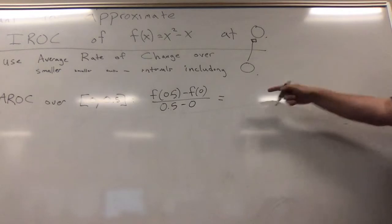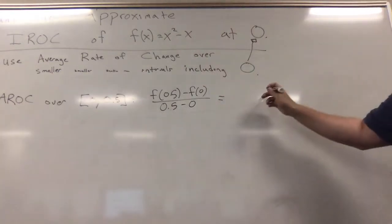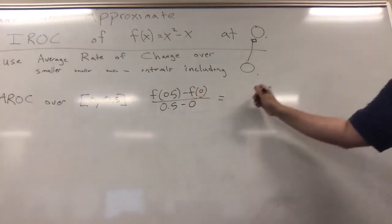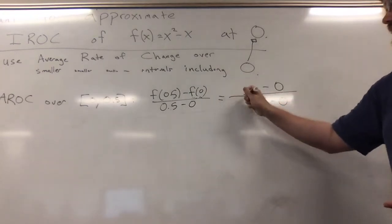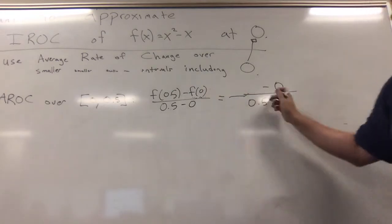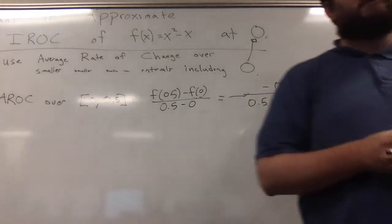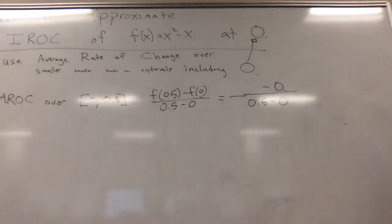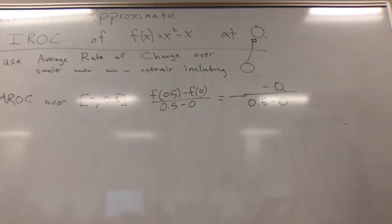It's sort of lucky here that f(0) is 0, since 0² - 0 is 0. So I know that this part I can just replace with minus 0. That's not always true but in this case it is. In general I'll be replacing this with whatever f(0) is. What is f(0.5)?